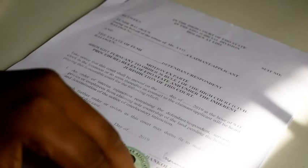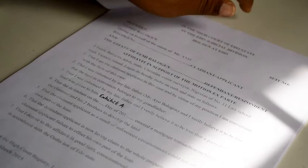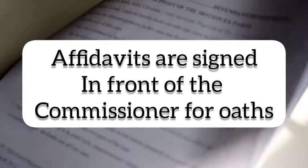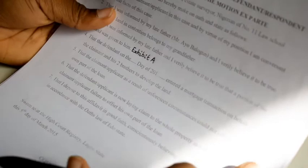The next thing you should always look at is the affidavits in the process. Affidavits should be signed in front of the commissioner for oaths. Whoever the deponent is should never sign the affidavit in your office or anywhere else — it should always be done in the office of the commissioner for oaths.